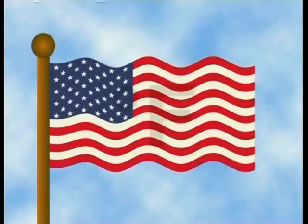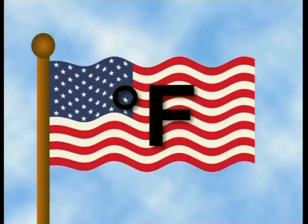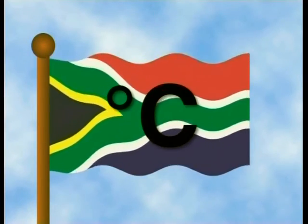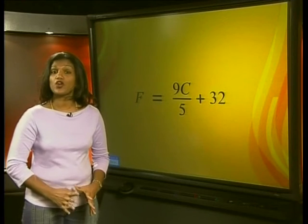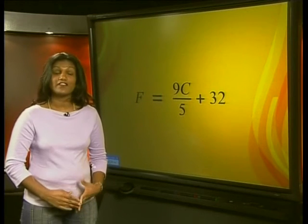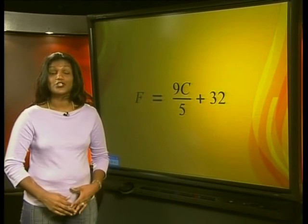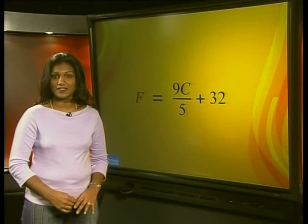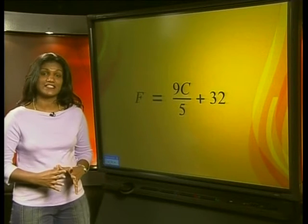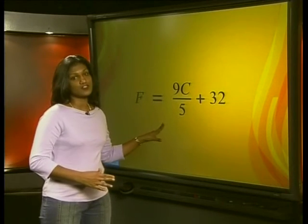Now for another example. In the United States, temperature is measured in degrees Fahrenheit, while in South Africa, we use degrees Celsius. This formula is used when we want to convert degrees Celsius, represented by C, to degrees Fahrenheit, represented by F. If you are watching an American movie and they mention that the temperature was 68 degrees Fahrenheit, you could use this formula to calculate the equivalent temperature in degrees Celsius. So to convert degrees Celsius, we must make C the subject of the formula.